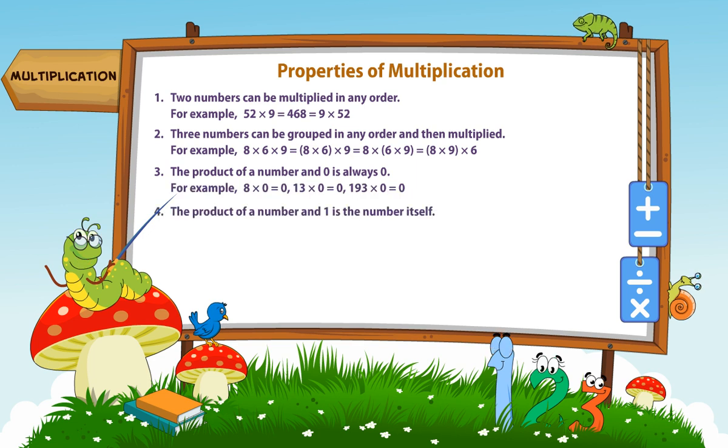The product of a number and 1 is the number itself. For example, 7 multiplied by 1 is equal to 7. 18 multiplied by 1 is equal to 18. 204 multiplied by 1 is equal to 204.